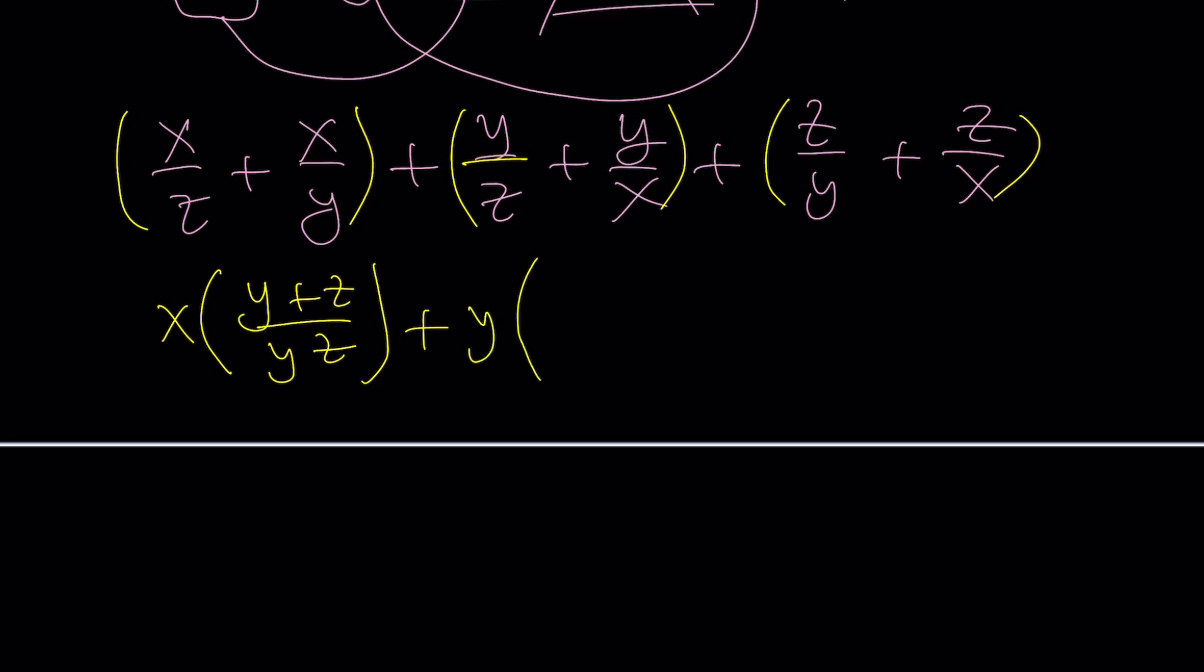Take the y out. You're going to have z plus x or x plus z. I guess it's probably better to write it that way. x plus z, and then xz, and then z out, and then x plus y over xy. Awesome.